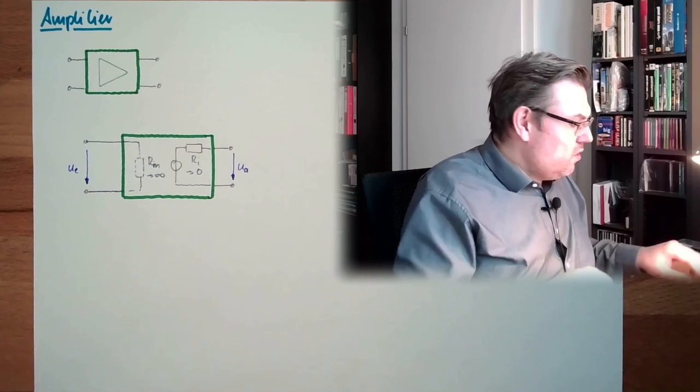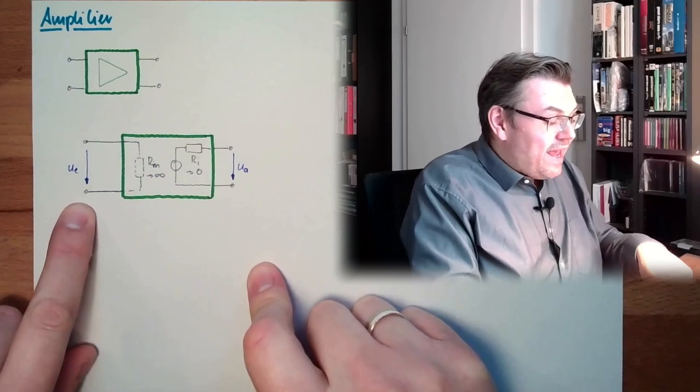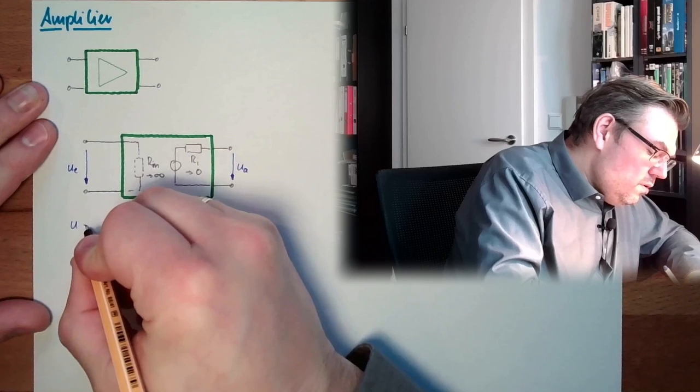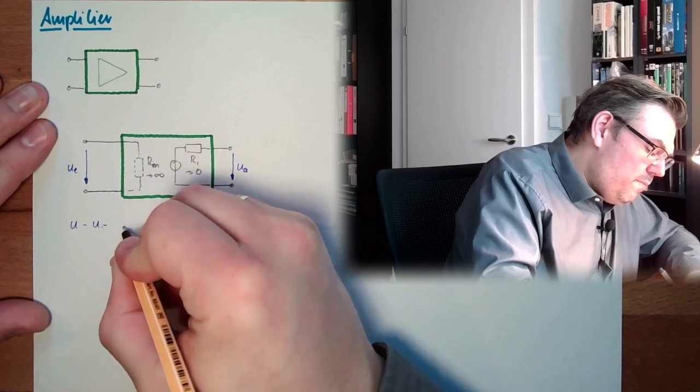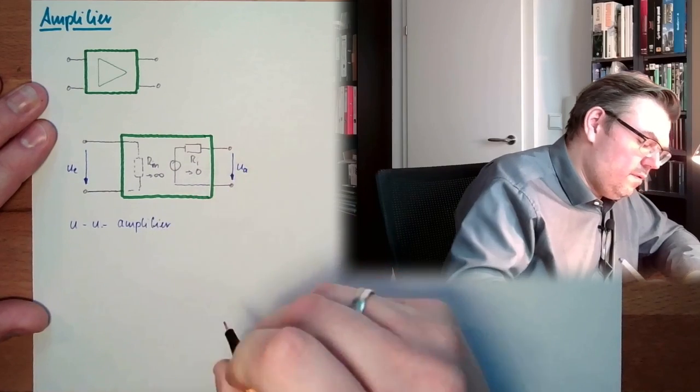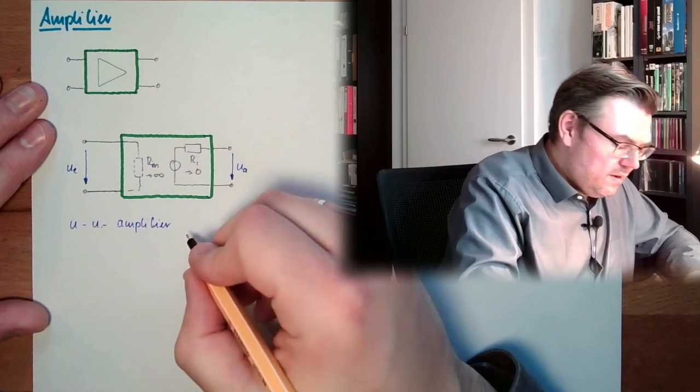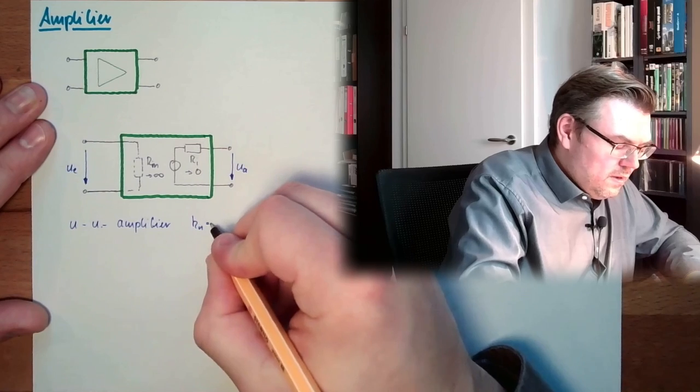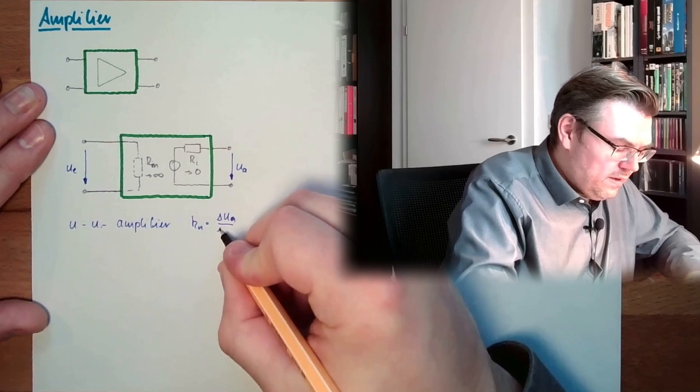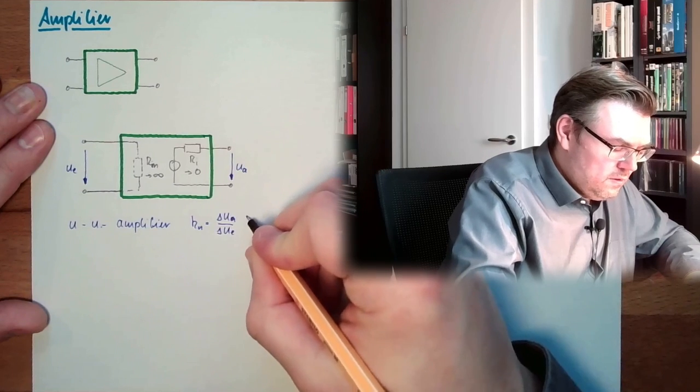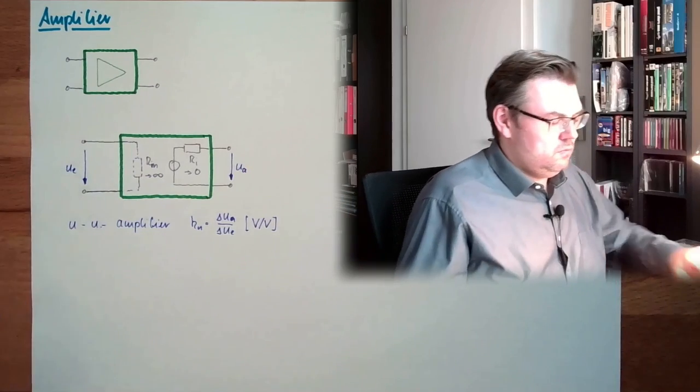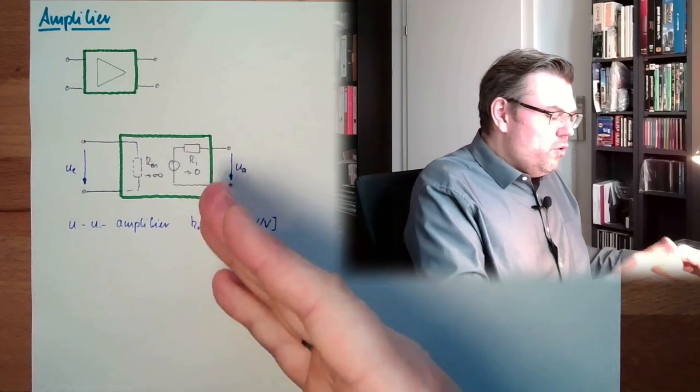This thing here is called, because it is gaining a U to a U, this is called a UU amplifier. And the gain factor, Ku, is delta Ua divided by delta Ue. So, it is volt by volt. This would be a UU amplifier.